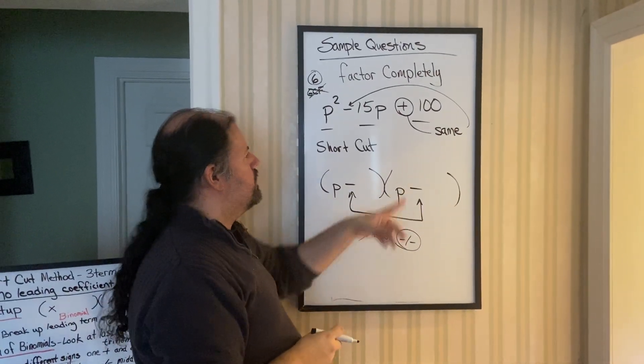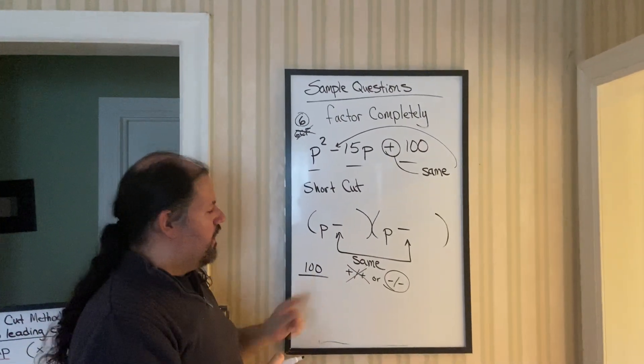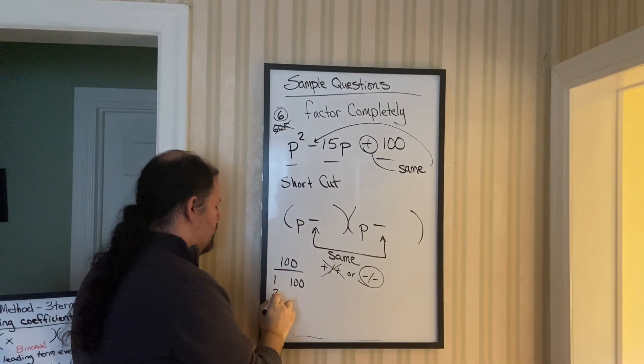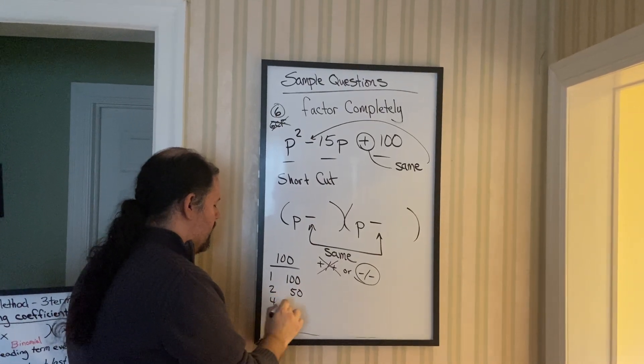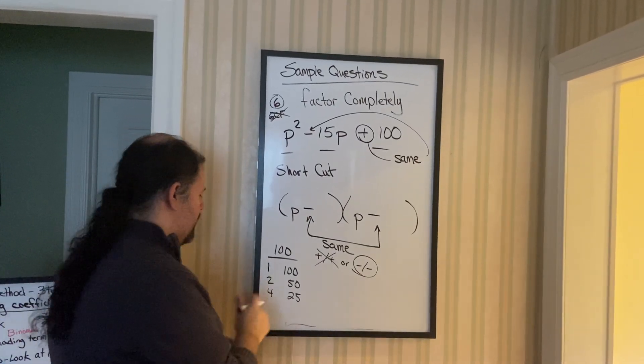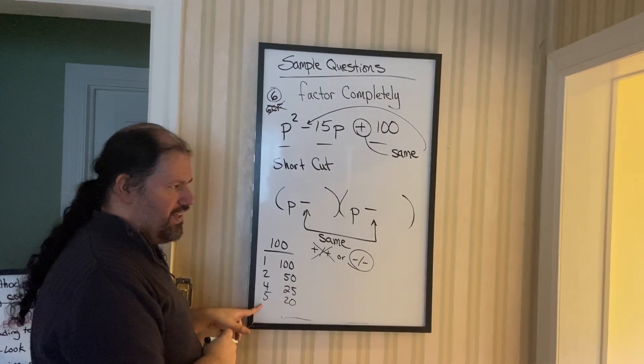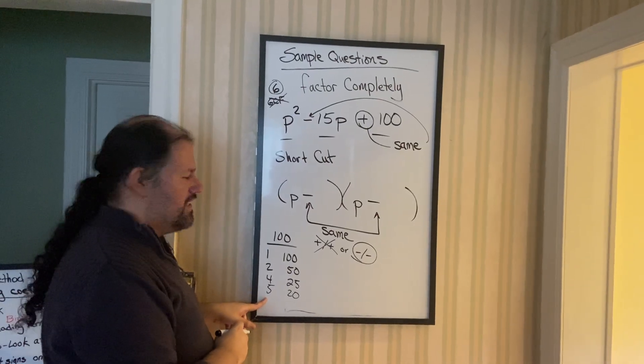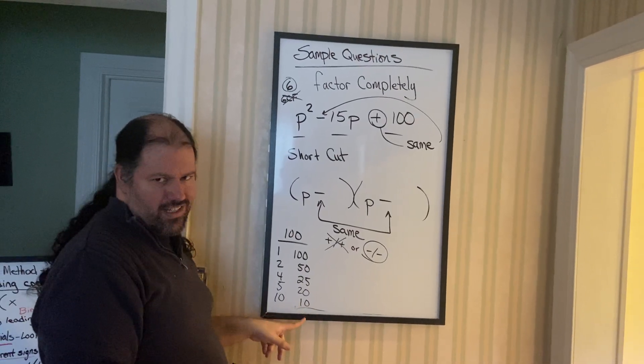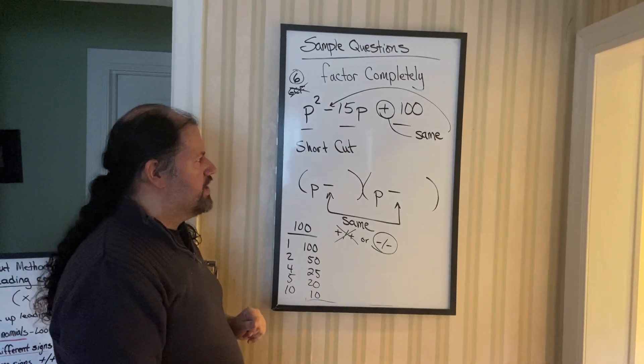Step three. Do all the combos of the last item. So, all the combos of 100. 1 and 100. 2 and 50. 4 and 25. Notice I skipped 3, because it doesn't go in there evenly. 5 and 20. 6, nope. 7, nope. 8, nope. 9, nope. 10. Aha, notice. Remember, when we get doubles, you're done. I don't have to check 11, 12, 13, because this is a repeat.